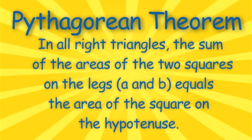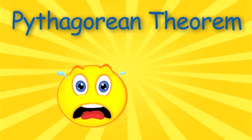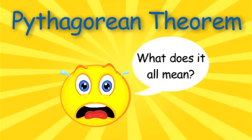The Pythagorean Theorem says that, in all right triangles, the sum of the area of the two squares on the legs, A and B, equals the area of the square on the hypotenuse. I know what you're thinking right now. What does it all mean?